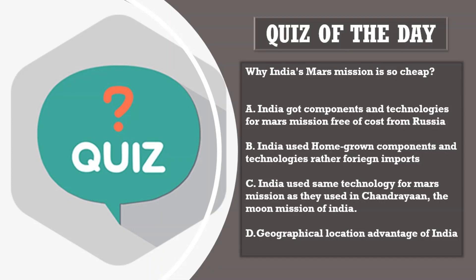Today's quiz question: we know about India's Mars mission Mangalyaan, regarded as a less expensive mission. The Prime Minister commented that India's Mars mission cost less than the Hollywood film Gravity. The question is: why is India's Mars mission so cheap? Option A: India got components and technologies free of cost from Russia. Option B: India used homegrown components and technologies rather than foreign imports. Option C: India used the same technology as Chandrayaan, the moon mission. Option D: geographical location advantage of India. Please post your answer in the comments.